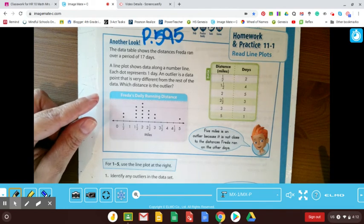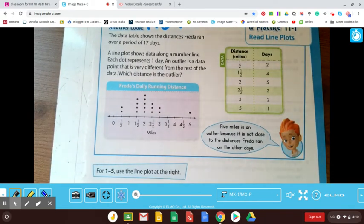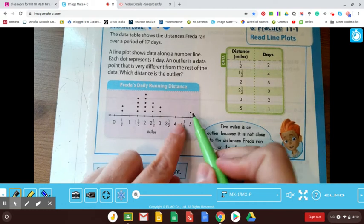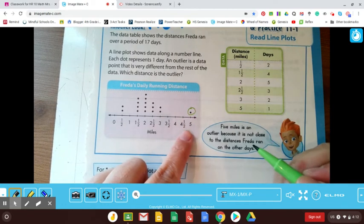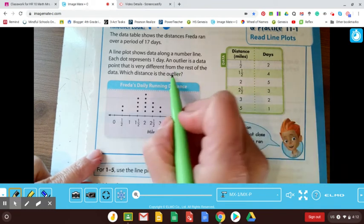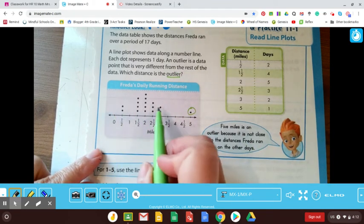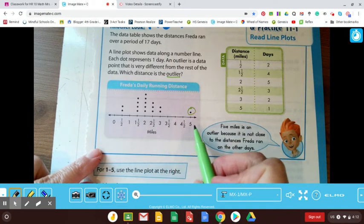Which distance is an outlier? I'm going to zoom in a little bit on Frida's daily running distance. I'm a little jealous of Frida, I'll be honest, and it looks like there is one dot that is kind of separated from the other dots right here. So it looks like five miles is the outlier, right?